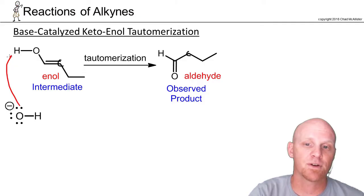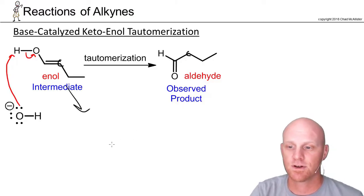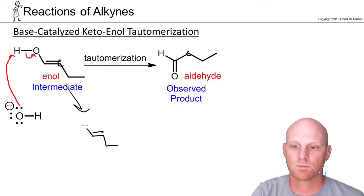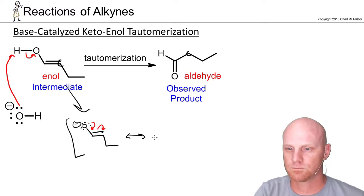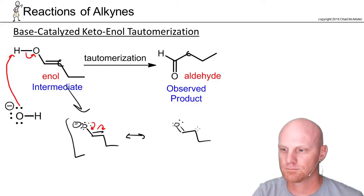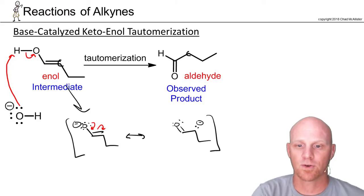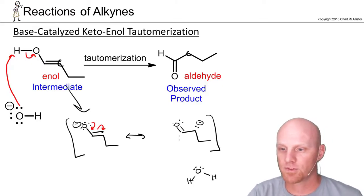The first thing we'll do is deprotonate the hydrogen off the oxygen, causing the old bond to break. That's going to lead us to this resonance-stabilized anion. We can show the other resonant structure here as well. We will also have a water molecule now in the solution. Then we'll simply protonate.